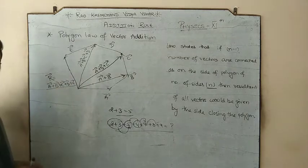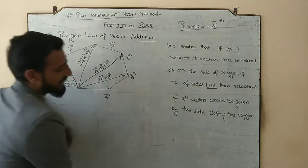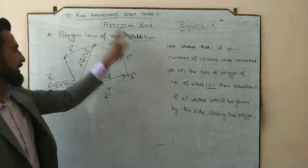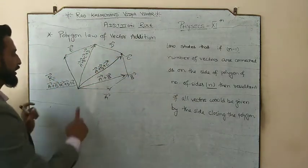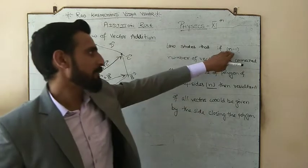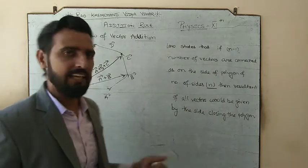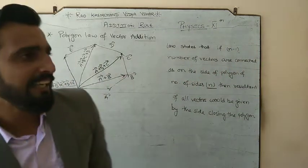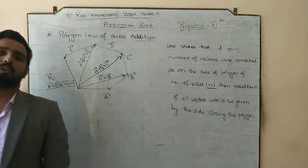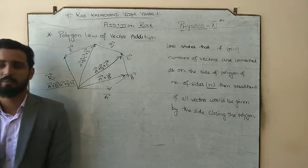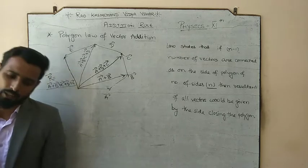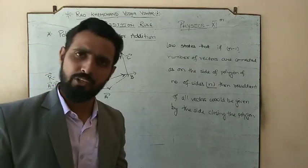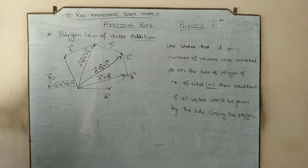So if we have n number of vectors, the polygon formed will have n+1 sides. If you have 5 vectors, the shape will have 6 lines — 5 are the vectors and the 6th line is the resultant. If n−1 vectors are the sides, then the nth side is the closing/resultant side. This is the polygon law of vector addition. To solve it, apply the two-at-a-time rule: first solve the first two, then add the result to the next, and continue.